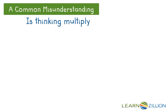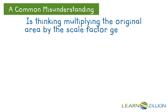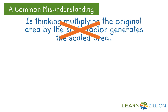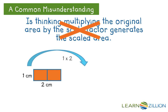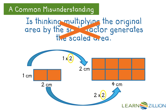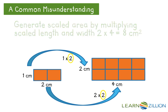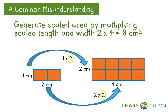A common misunderstanding is thinking that multiplying the original area by the scale factor generates the scaled area. This is incorrect. If you remember the scale factor has already increased the original length and width by that factor, you will understand that it doesn't make sense to multiply the original area by the scale factor. Generate the scaled area by multiplying scaled length times scaled width: 2 times 4 equals 8 square centimeters.